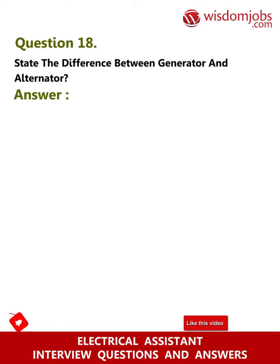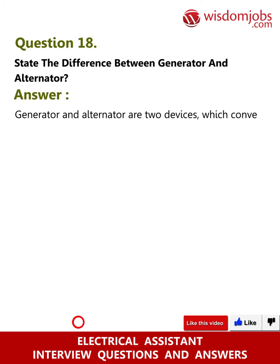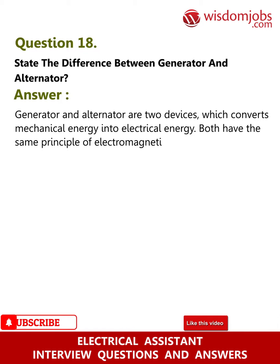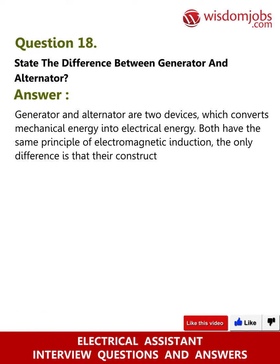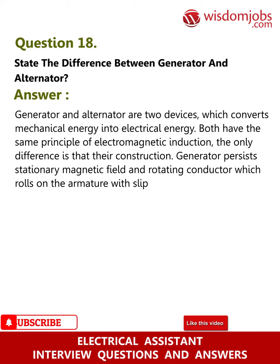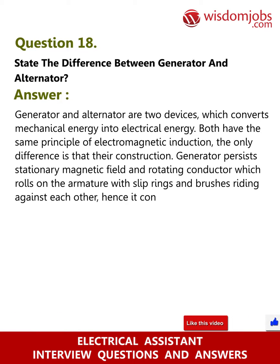Question 18: State the difference between a generator and an alternator. Answer: A generator and an alternator are two devices which convert mechanical energy into electrical energy. Both have the same principle of electromagnetic induction. The only difference is in their construction. A generator has a stationary magnetic field and a rotating conductor which rolls on the armature with slip rings and brushes riding against each other, hence it converts the induced EMF into DC current for an external load.